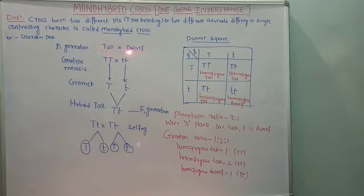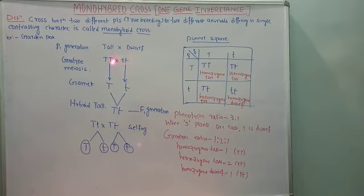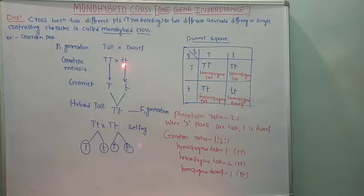The phenotype of the parent — that is the external appearance of the plant — is tall or dwarf. These two characters are called phenotypic characters. These phenotypic characters correspond to genotypes. The genotypes are represented as capital T capital T (TT) for the pure tall plant, and small t small t (tt) for the pure dwarf plant. This indicates the genotype of the pea plant.